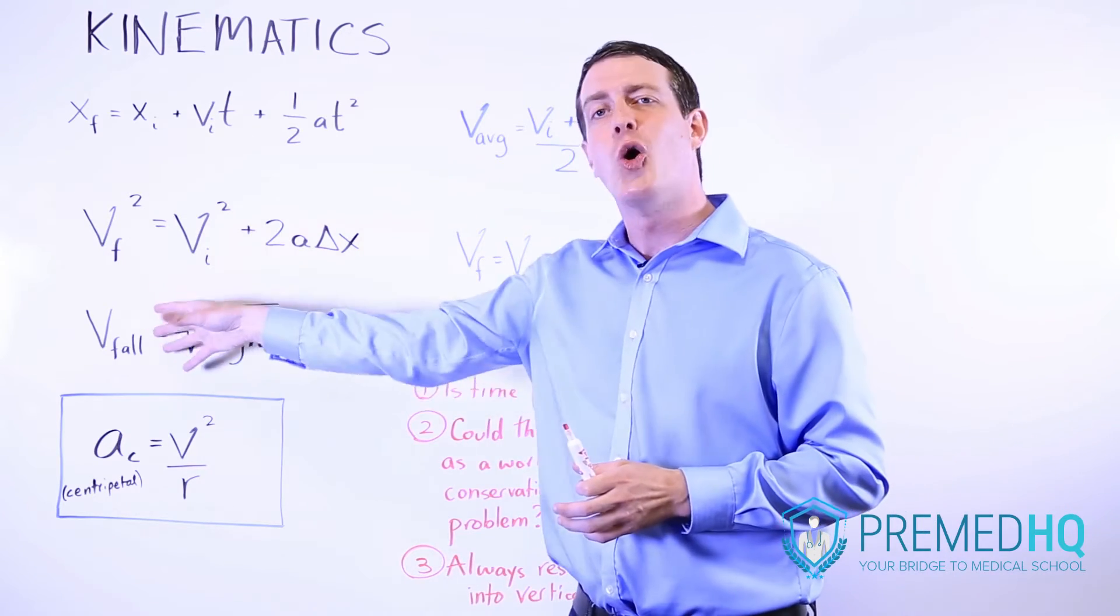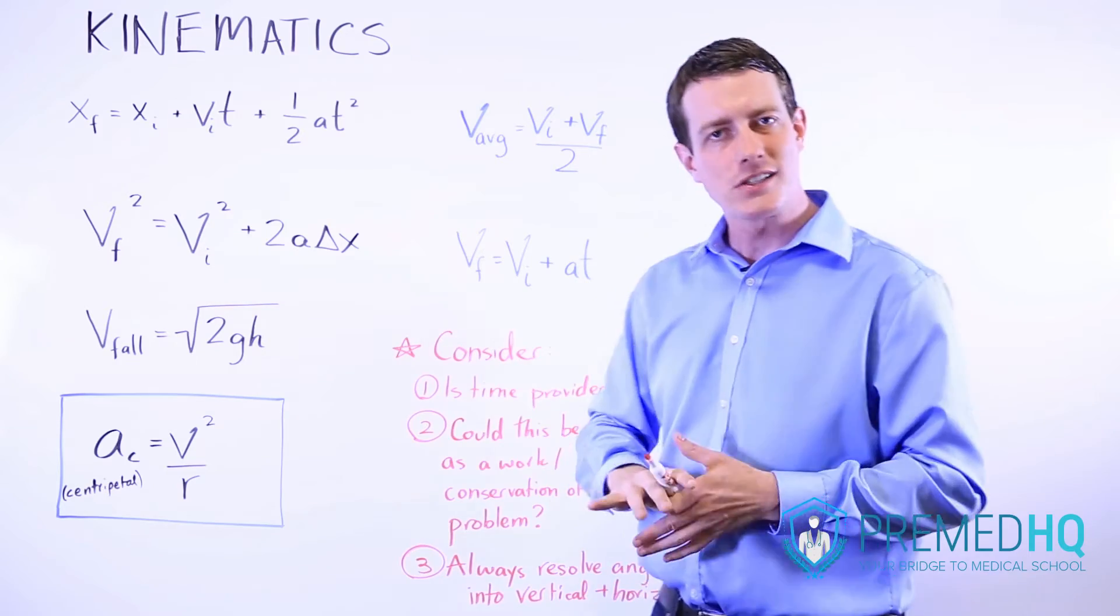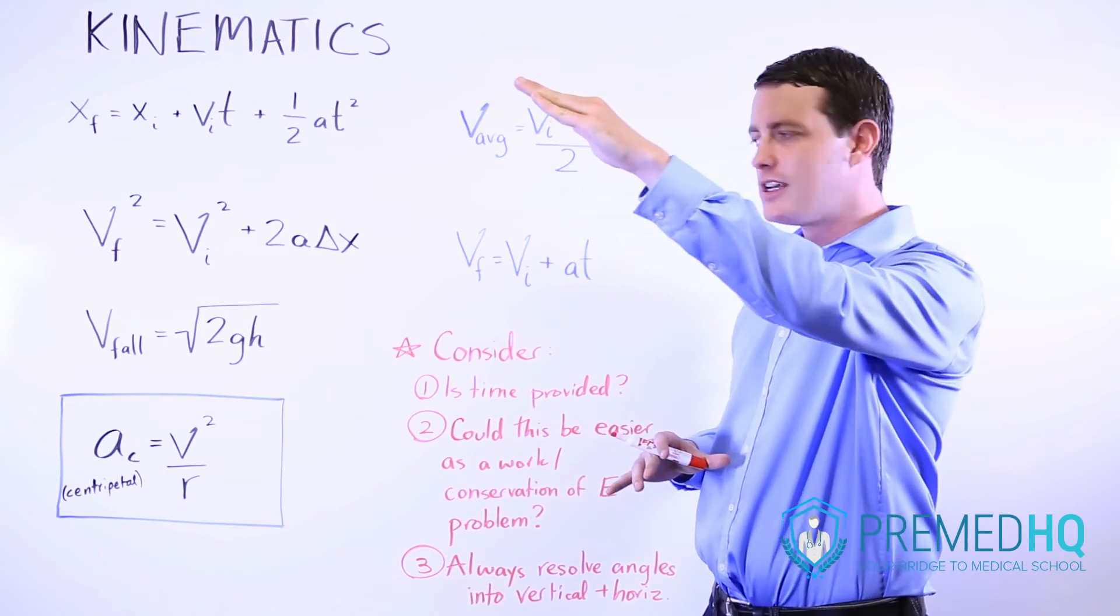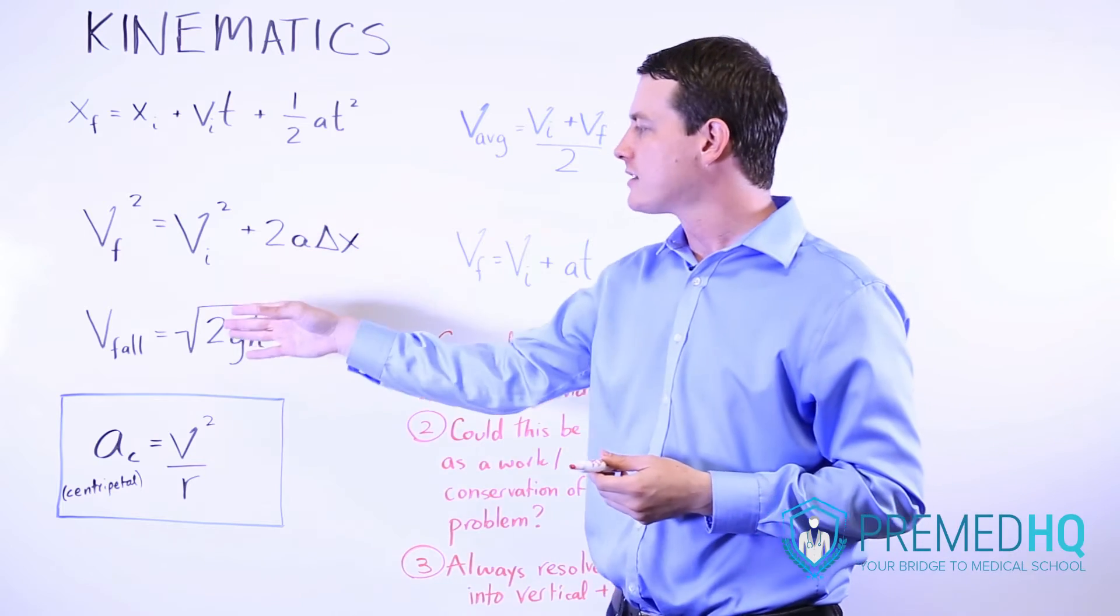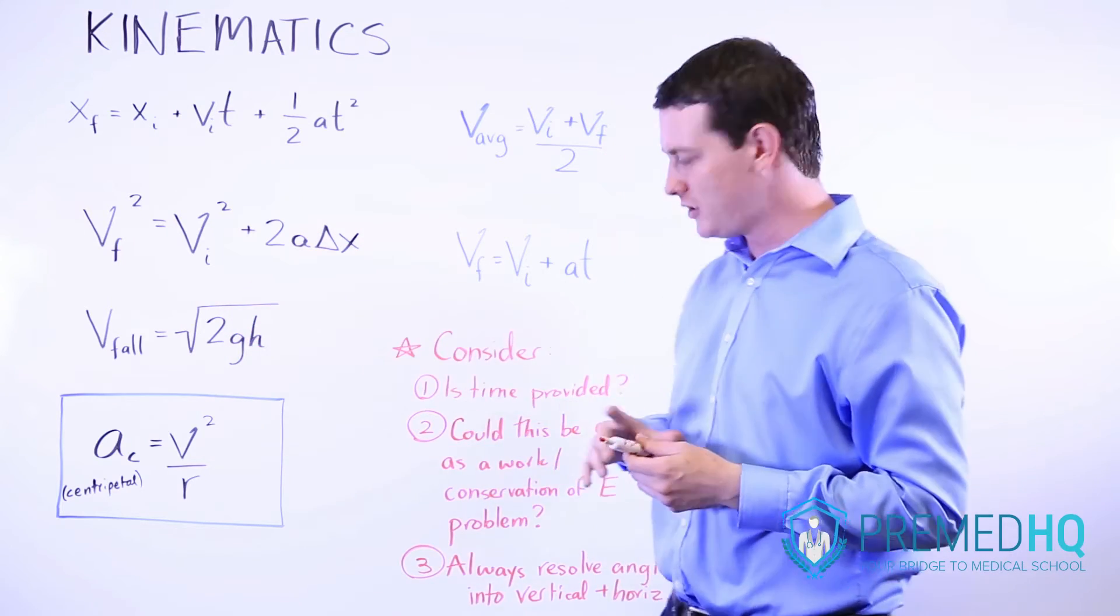Note that the falling object formula can only work if it starts from rest. An object has to start from rest, then fall a certain distance in order for you to use velocity equals the square root of 2gh.